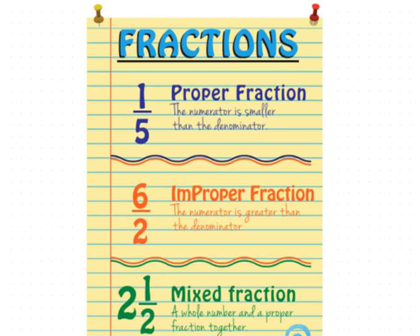We have three types of fractions. The first one is the proper fraction — the numerator is smaller than the denominator. That means you didn't finish one whole: you didn't finish the chocolate, you didn't finish your pizza, you didn't get the full mark in the exam.